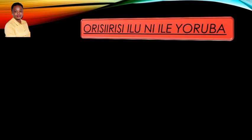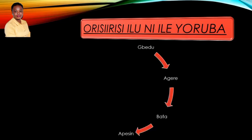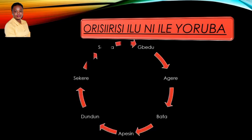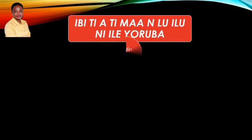So let's look at the types of drums we have: Bedu, Basa, Akwesi, Dundu, Shekere, Sakara, Yalu, Gongong, Agidigo, Benbe. We have different types of drums.